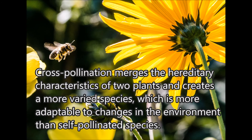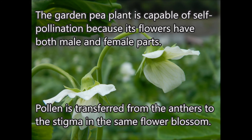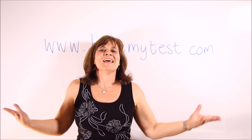Here are two sample sentences: Cross-pollination merges the hereditary characteristics of two plants and creates a more varied species, which is more adaptable to changes in the environment than self-pollinated species. The garden pea plant is capable of self-pollination because its flowers have both male and female parts — pollen is transferred from the anthers to the stigma in the same flower blossom.